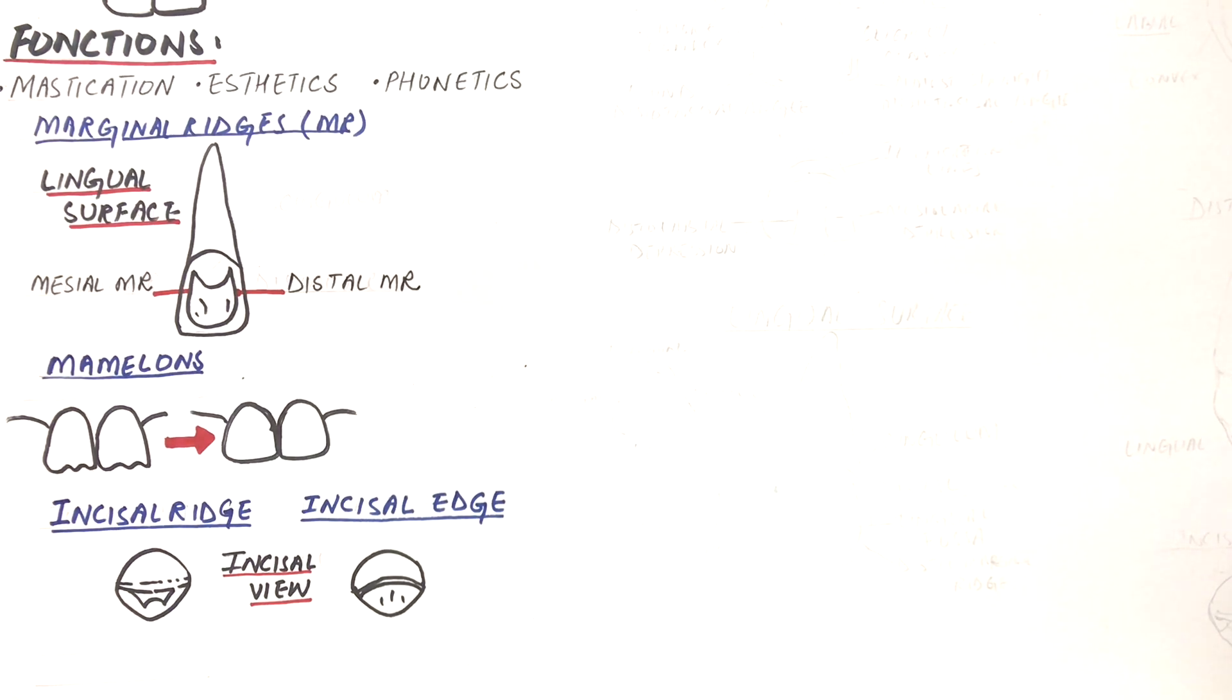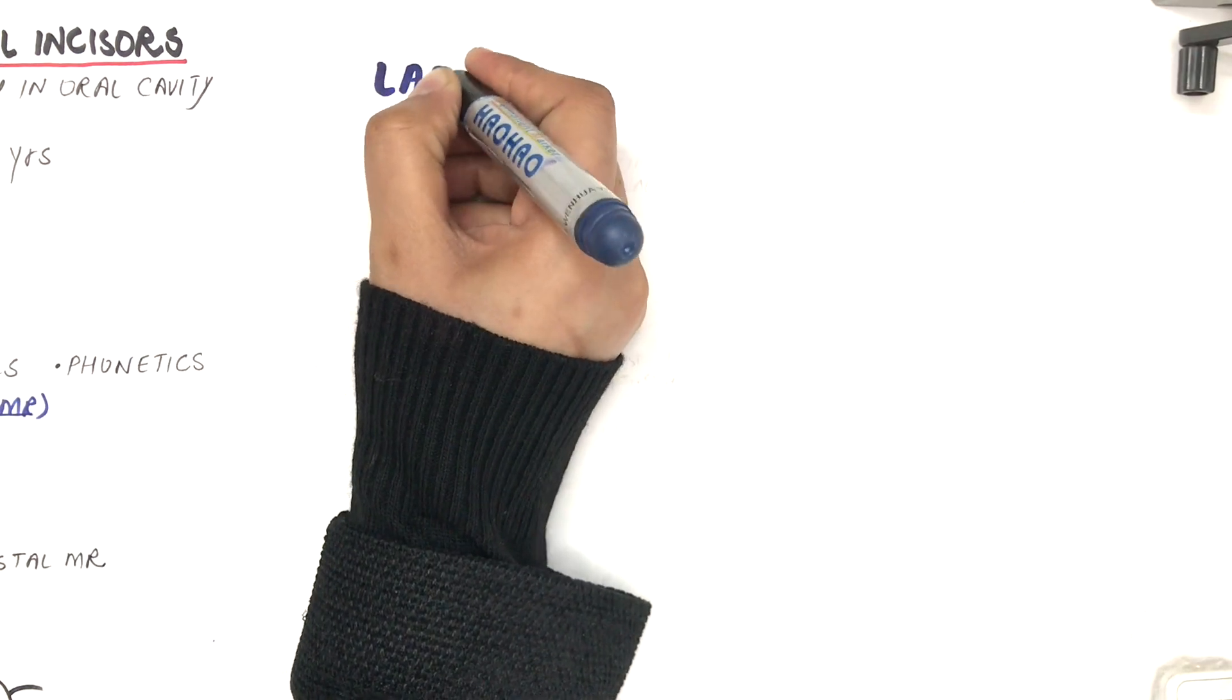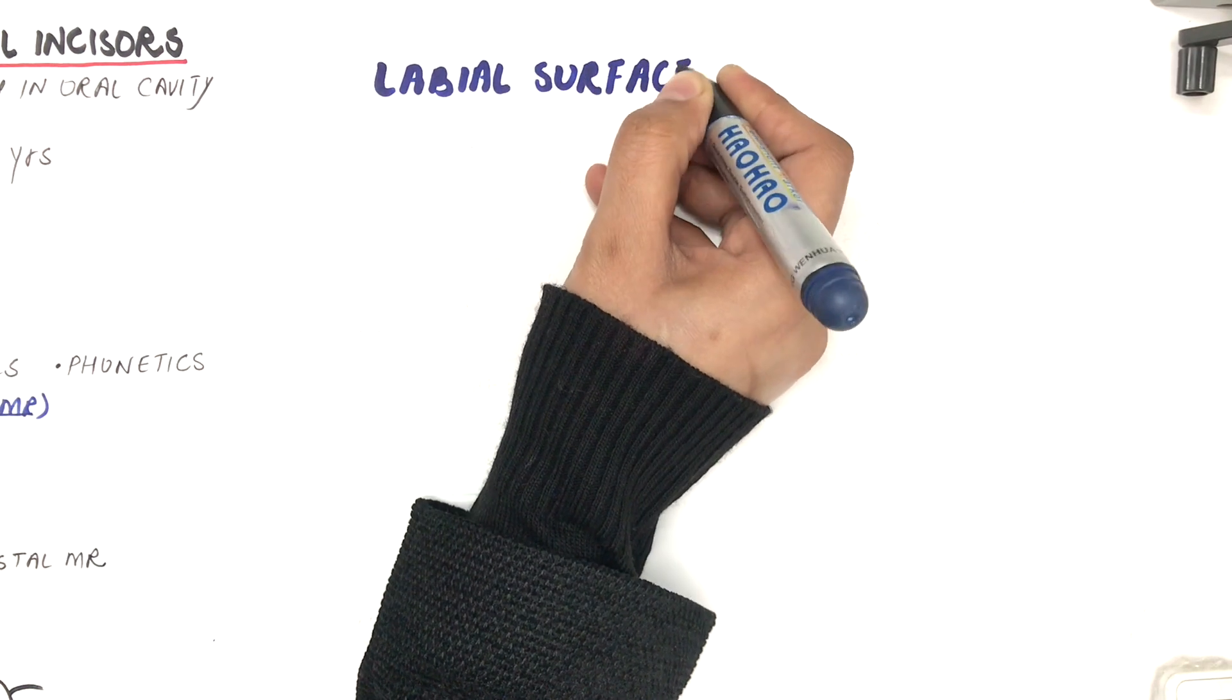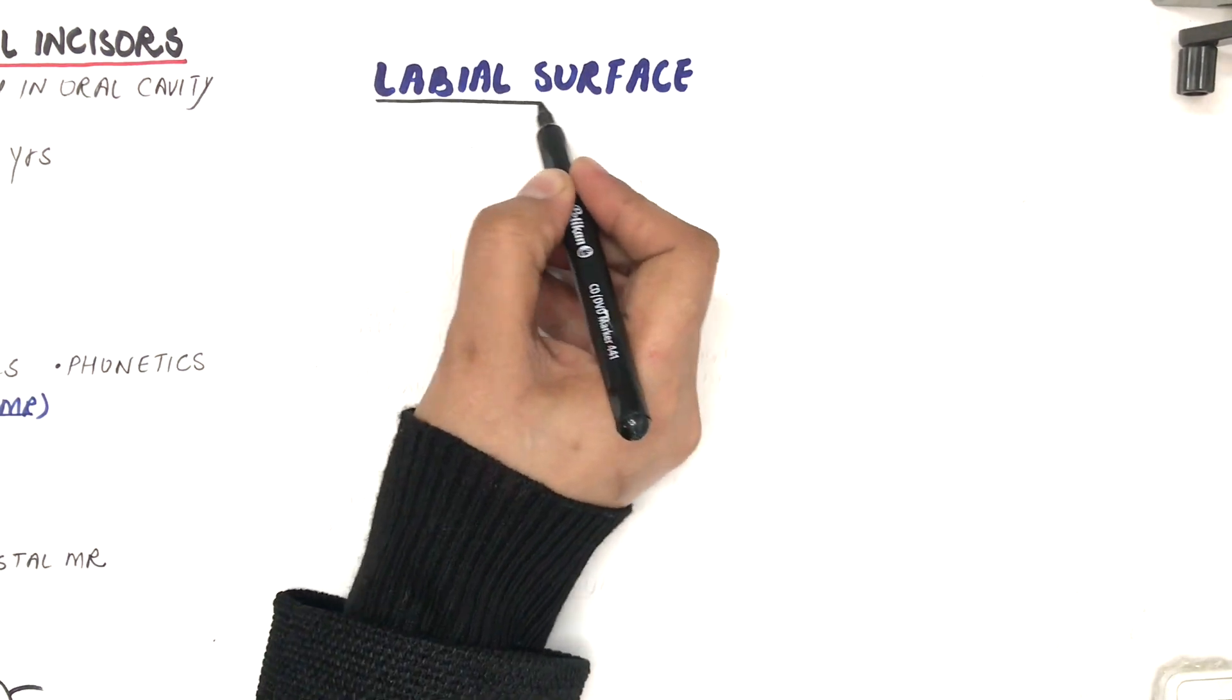Let's study the morphology of central incisors from the labial, lingual, distal, and mesial aspects respectively. From the labial surface, the maxillary central incisors are trapezoidal in shape.